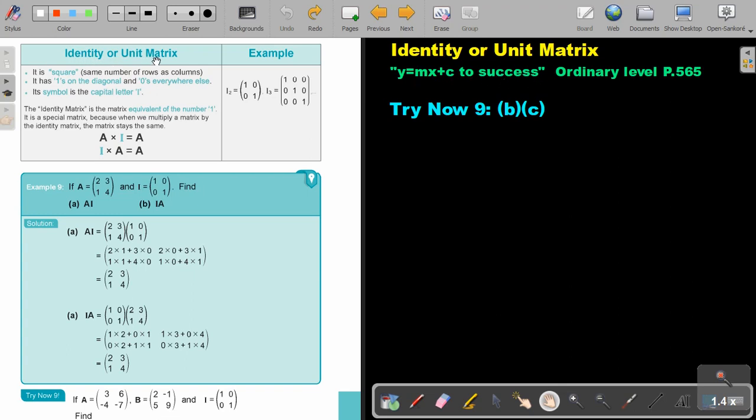Identity or Unit Matrix. It's a square matrix, meaning it has the same number of rows as columns. It has 1s on the diagonal and 0s everywhere else.